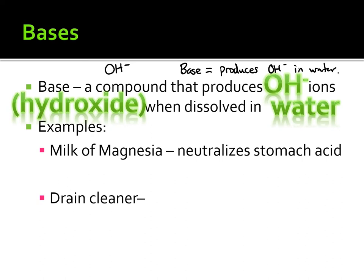An everyday example is sodium hydroxide, NaOH, which is used to make different types of soaps and shampoo. When we add NaOH to water, water comes in and breaks this molecule apart essentially in half. This means we get a sodium ion and a hydroxide ion.